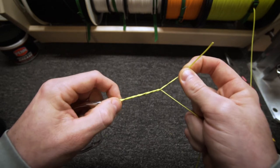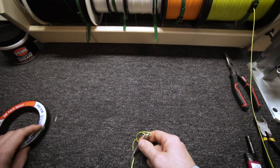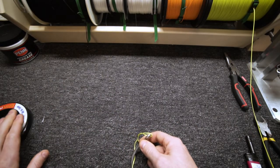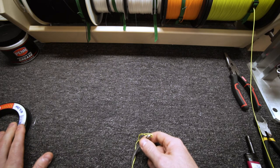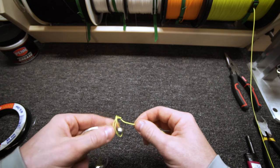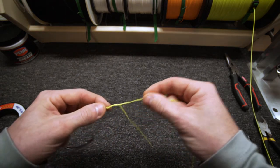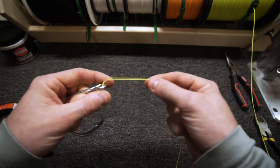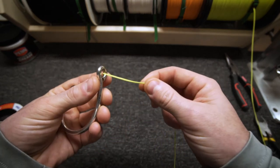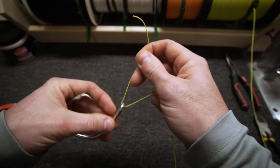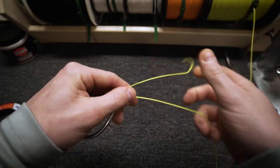I have 60 and I even have 100 pound Genkai mono. To tie 100 pounds and even 60, you could not do eight, nine, ten wraps. It would be impossible to get it tied. But lower line, 15, 20, 30 pound, you can do more wraps and the knot will clinch on itself.